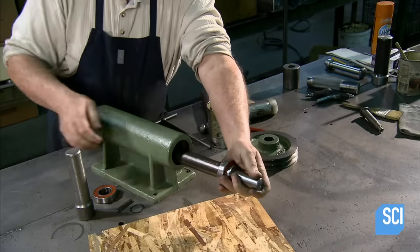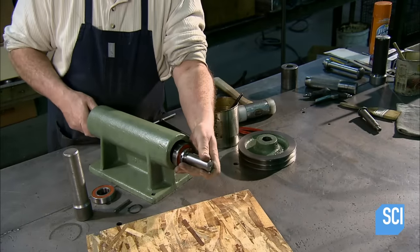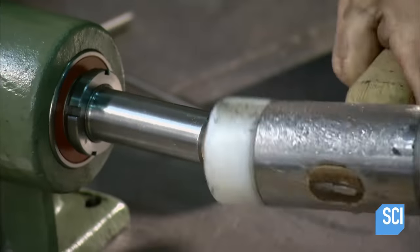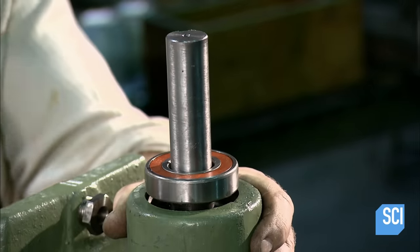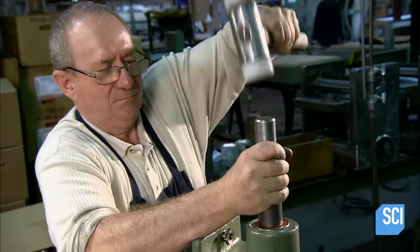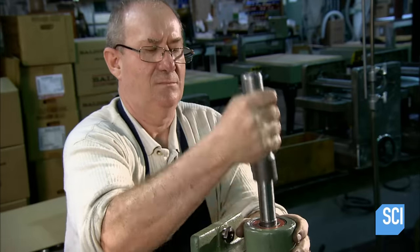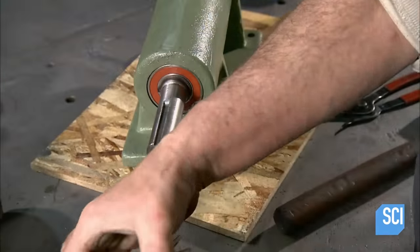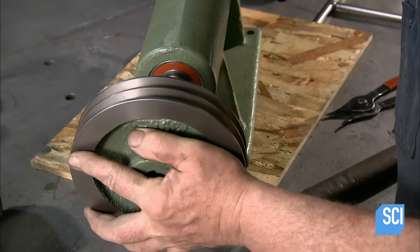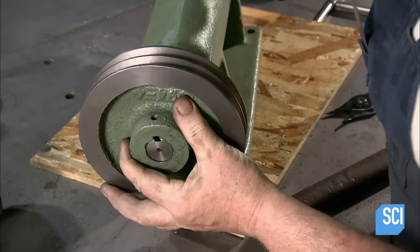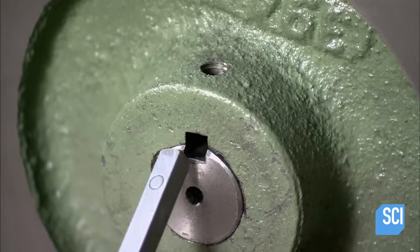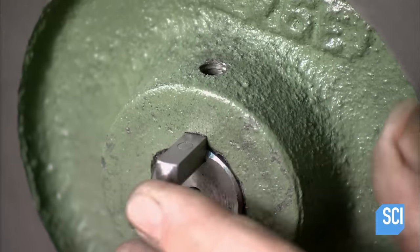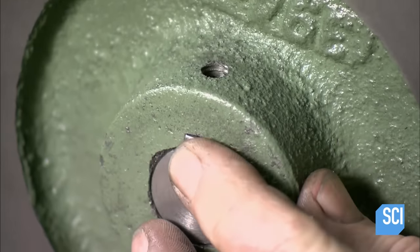One of the saw's key components is this lower bearing case. It links the motor to the lower of two cast iron wheels which turn the saw blade. Workers will later mount that lower wheel on one end of the bearing case shaft. Now, on the opposite end of the shaft, they mount the drive pulley. The motor will rotate the drive pulley, turning the shaft, and consequently the lower wheel on the opposite end, which moves the saw blade looped around the lower and upper wheels.